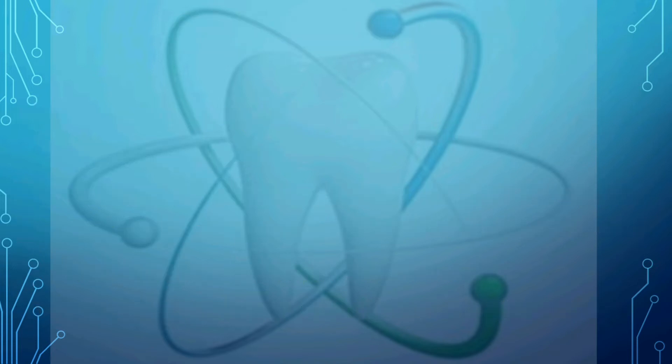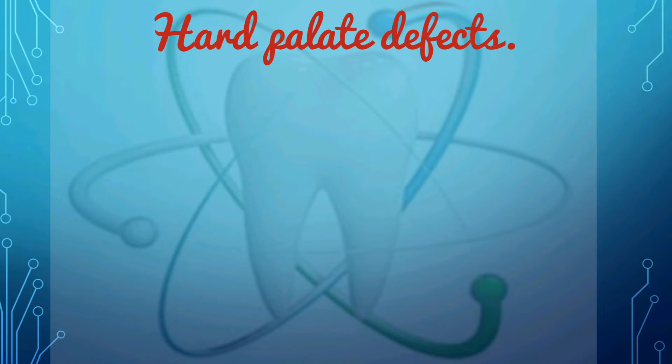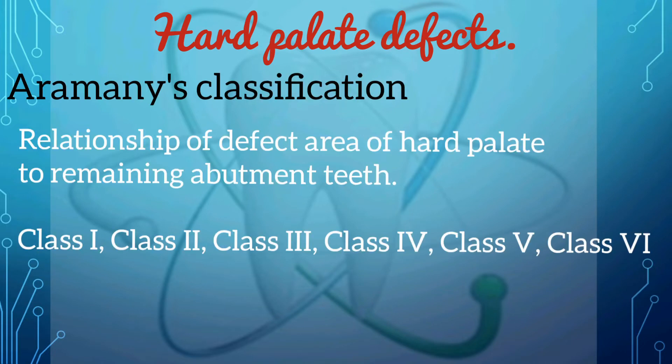Next we go through the prostheses made for the treatment of hard palate defects. The Aramanis classification classifies the relationship of the defect area of the hard palate to the remaining abutment teeth. The defects of the hard palate can be divided into six different groups: Class 1, 2, 3, 4, 5, and 6.